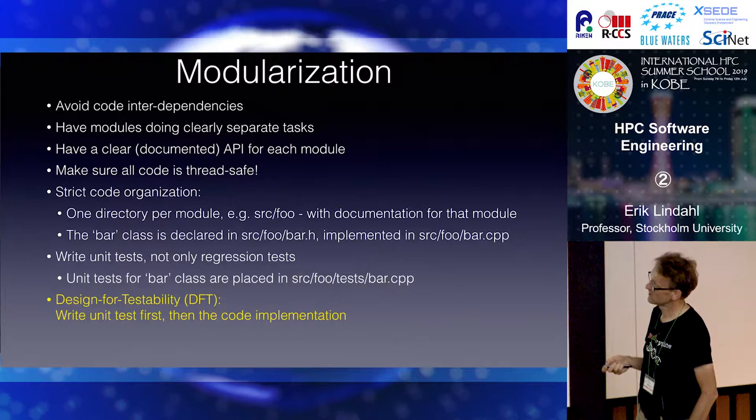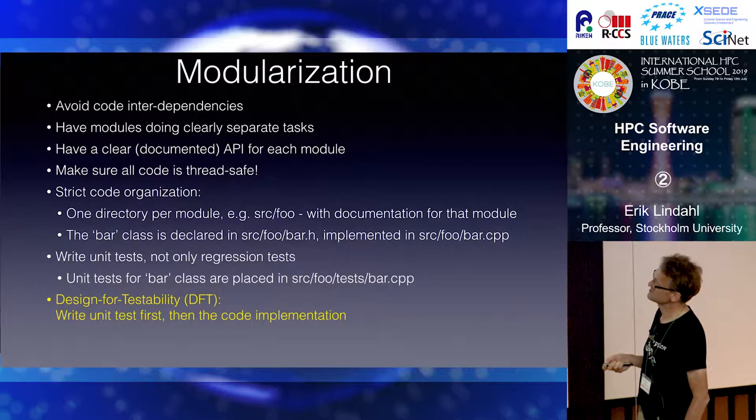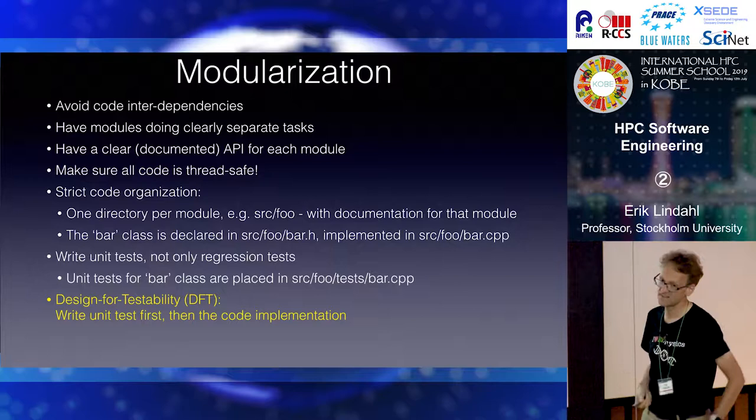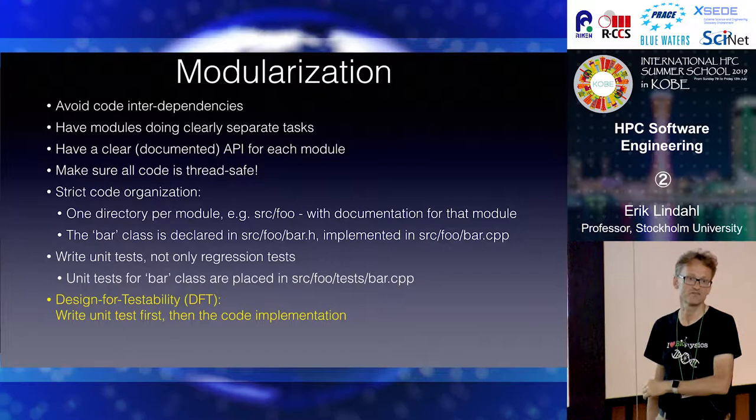In the case of C++, for instance, if I have a module called foo and a class called bar in that, source/foo should be the module directory, and then I actually have some sort of high-level documentation in Sphinx there. The class bar is then declared in bar.h and implemented in bar.cpp. Other classes should similarly have one declaration file and one implementation file. It will make it trivial to find that class in the future.